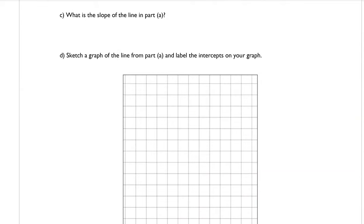Part C asks for the slope of the line from Part A. The equation was y equals 5 over 2x minus 2. The slope is the numeric value that is the coefficient of x, so our slope is 5 over 2.